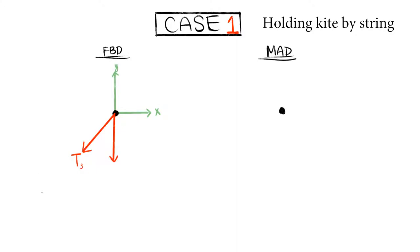Then there's weight, mg of the kite, pointing straight down in a negative vertical direction. Then there's a drag force created by the wind and pointing towards the tail in a positive horizontal direction. And lastly, there's the lift force, created by the wind and pointing straight up in a positive vertical direction.